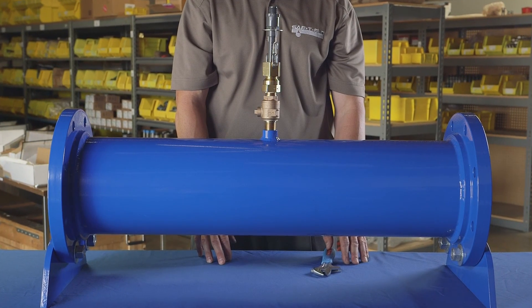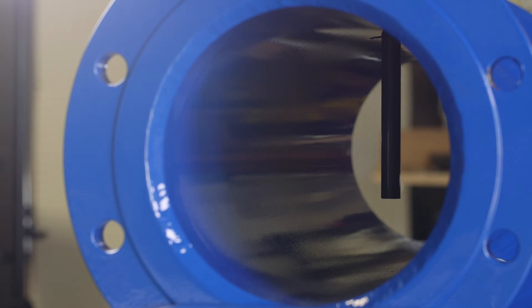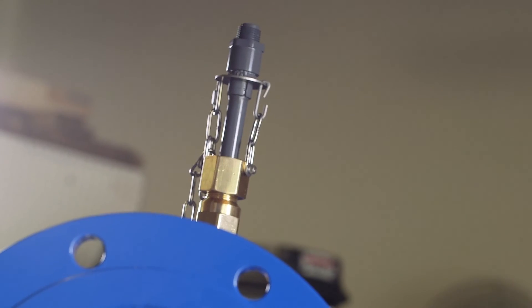This demonstration shows how to properly extract and insert a retractable injection quill from a process pipe.